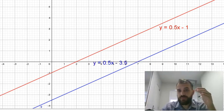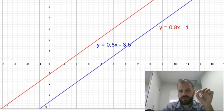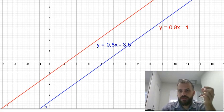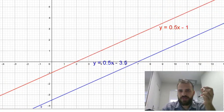Now if I change the gradient of one but we keep them parallel, watch what happens. All right, so you can see that the gradients y equals 0.8x minus 3.5, y equals 0.8x minus 1. The gradients remain the same even though the lines move around a little bit.